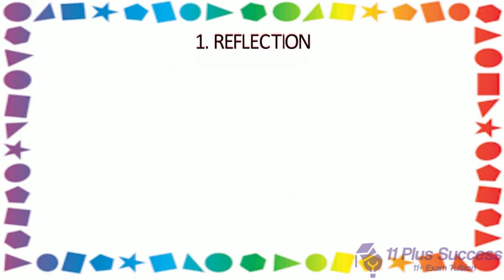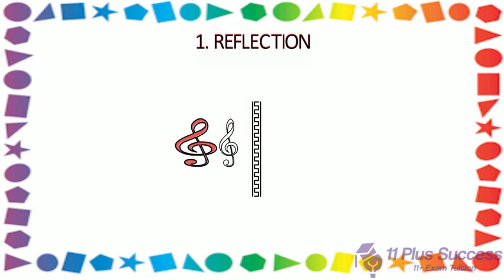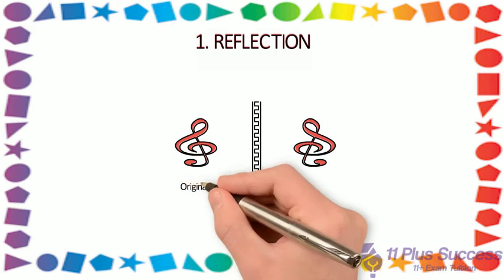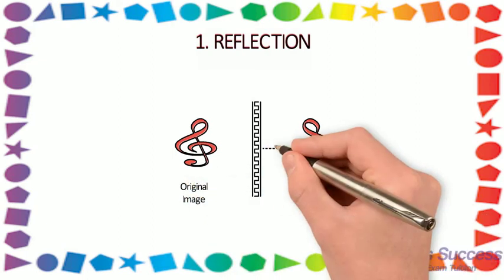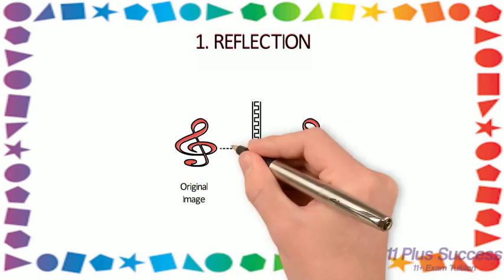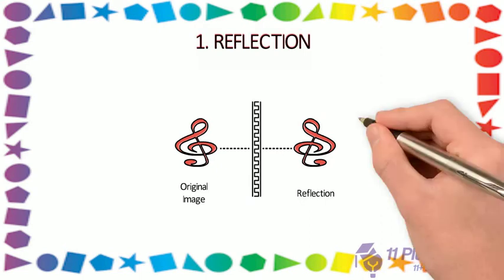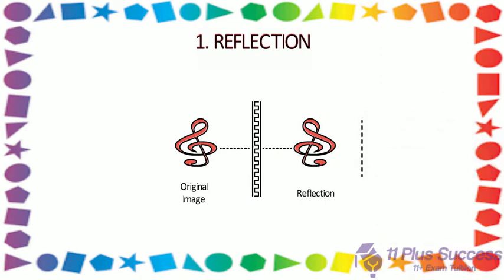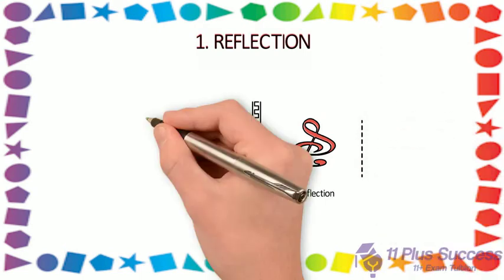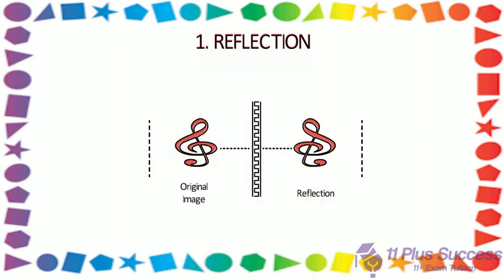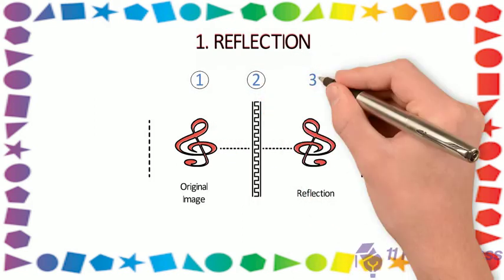1. Reflection. This type of transformation produces a mirror image of an original image, in which the mirror image is always the same distance as the original image from the mirror line, and the reflection is the same size as the original image. In short, there are three components in reflection: original image, line of reflection, and mirror image.